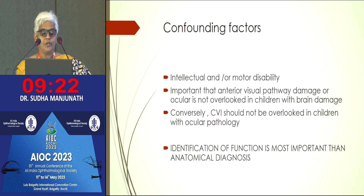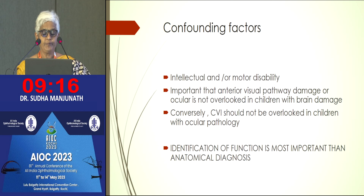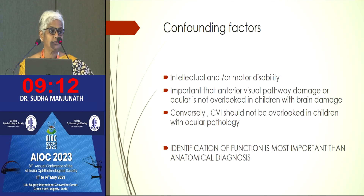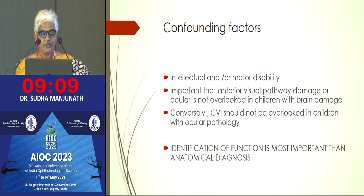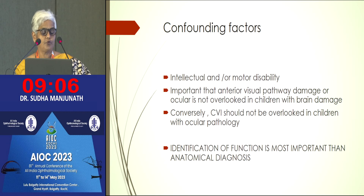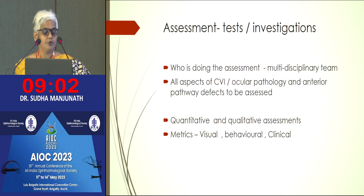This is very important because just because a child has CVI, we must not neglect eye examination, and on the other hand, if there is a macular pathology, we must not assume that CVI cannot concurrently be present. In all these cases, identification of function is more important than anatomical diagnosis.